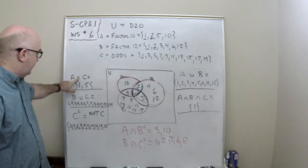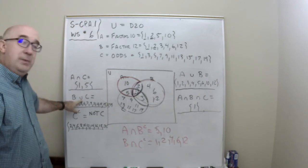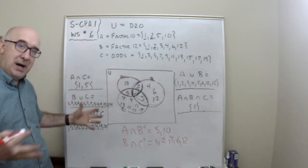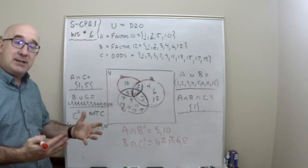Get used to the symbols of intersection, meaning and, A and C. U meaning union, meaning combining those things together. And C meaning complement, the things that are not that.